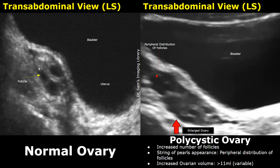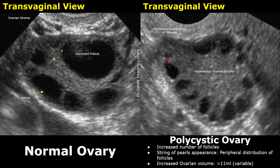This is a transabdominal longitudinal view of a normal ovary. We can see some follicles. The right side image shows an enlarged ovary with multiple follicles in a peripheral distribution. This is a transvaginal image of a normal ovary — the largest follicle is the dominant follicle. And this image shows a polycystic ovary with numerous peripherally distributed follicles with a hyperechoic central stroma.